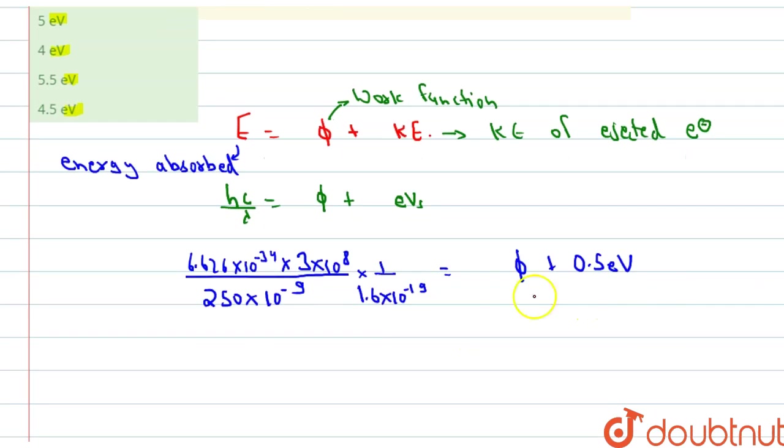So now let's start solving this. We will get Phi equals, if we solve this, we will get this is equals to 4.969 electron volt and this is minus 0.5 electron volt. So basically the answer of Phi we will get is this minus this. So this is basically 4.469 electron volt.